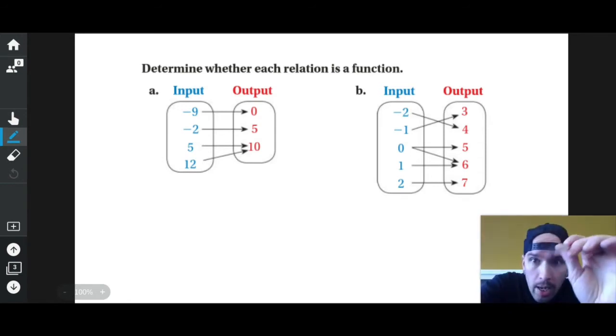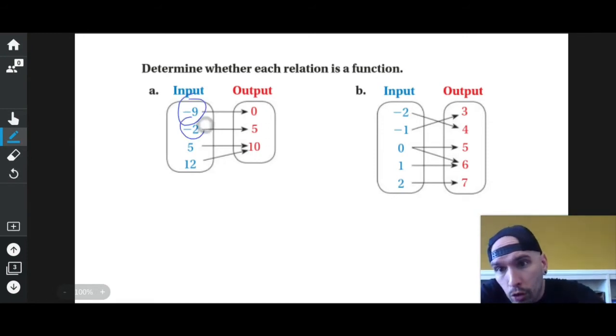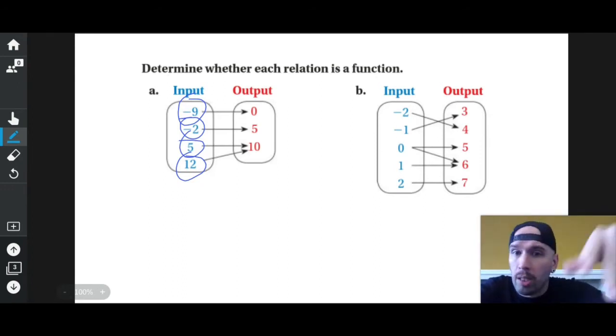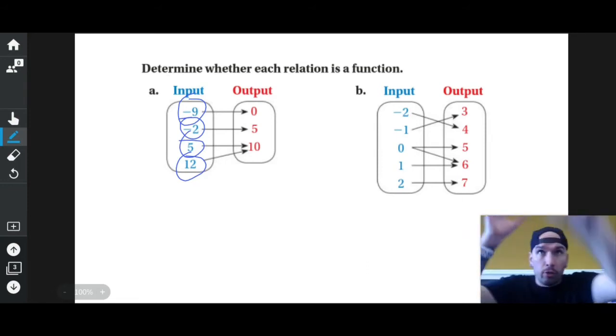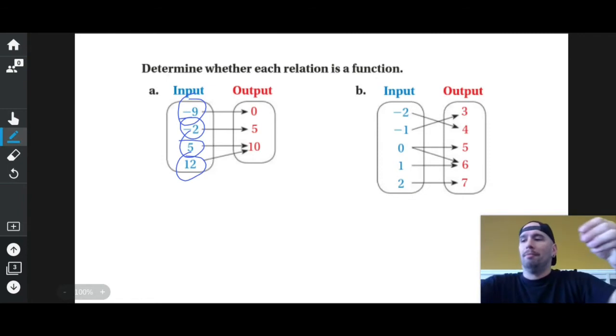It's as if I were to take a dart and my darts were labeled negative nine, negative two, five, and twelve. If I were to throw them at targets, my negative nine would give me zero points, my negative two dart would give me five points, my five dart would give me ten points, and my twelve dart would give me ten points. You might be like, well hold on, ten is used twice, you can't do that. Sure I can. If I'm playing darts and I hit ten and then I throw a dart and hit ten again, that's fine. So this is a function because every x value is used exactly once.